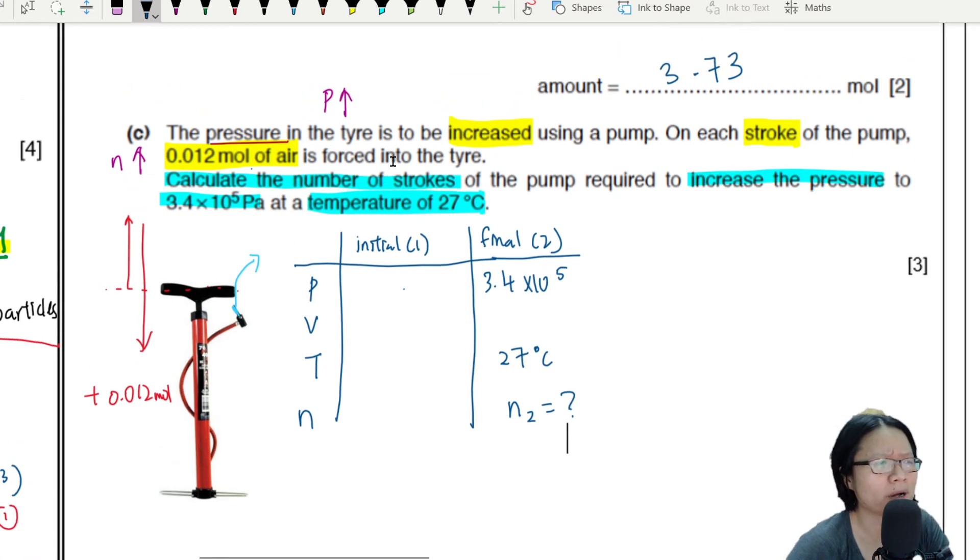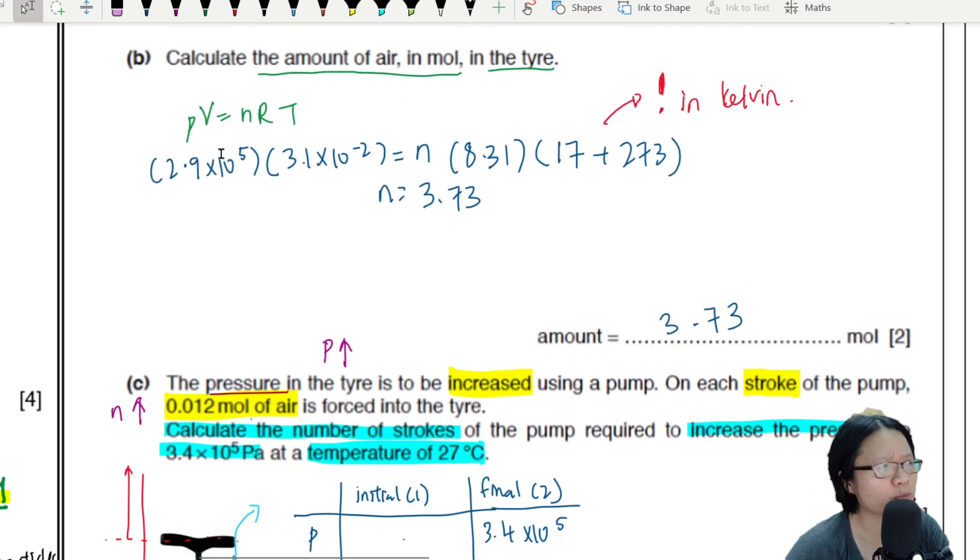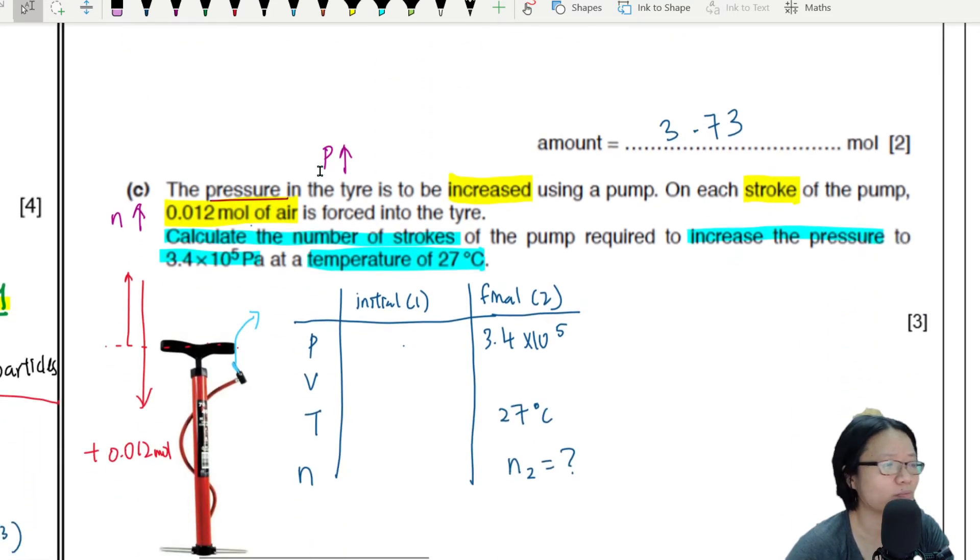Okay, what about initial conditions? Now let's harvest from the top. Well, the initial pressure is 2.9 times 10 to the power of 5. Sure, 2.9 times 10 to the power of 5.